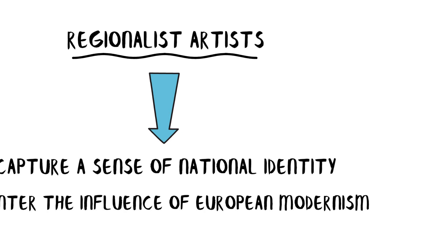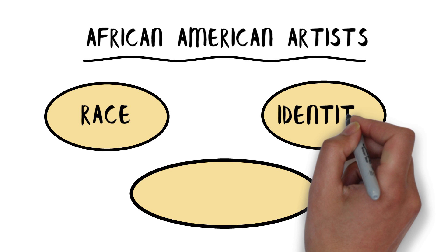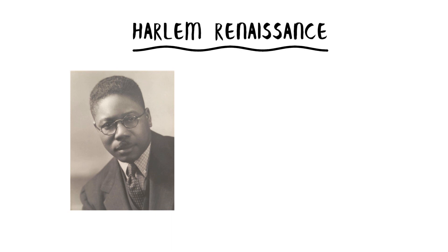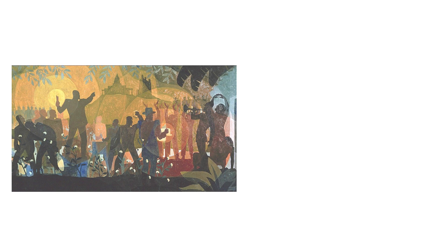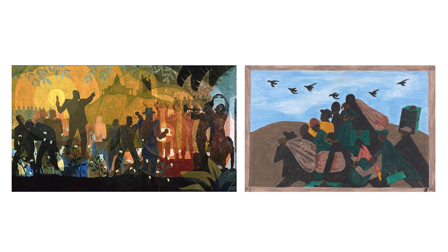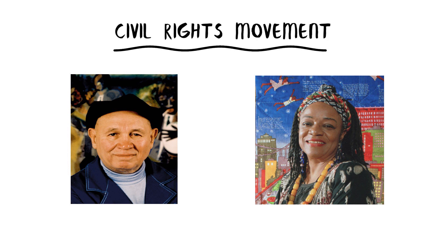African American artists had distinctive concerns related to race, identity, and representation. During the Harlem Renaissance in the 1920s and 1930s, artists such as Aaron Douglas and Jacob Lawrence depicted African American experiences and culture, challenging racial stereotypes and asserting a positive African American identity. Later, during the civil rights movement in the 1960s, artists like Romare Bearden and Faith Ringgold used their art to advocate for equality and justice.